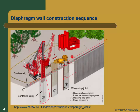On bigger projects the hopscotch method is often better because you can mobilize more equipment and go faster. On a small project, it's sometimes better to just go in one direction because you can't afford or don't need that much equipment. That's a means-and-methods question the contractor will figure out. But in any case, you excavate panels.